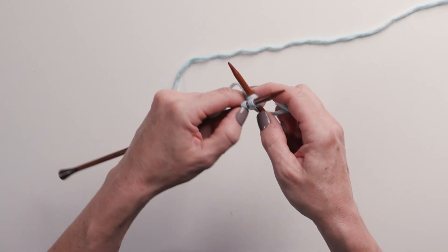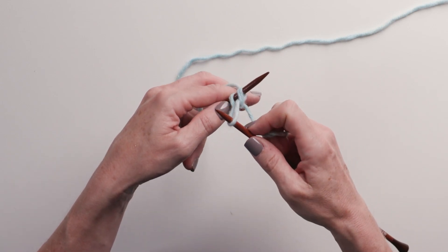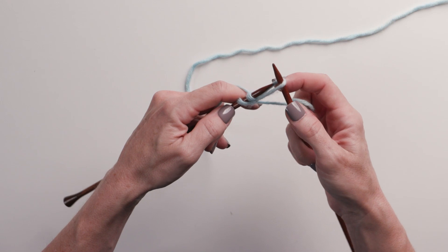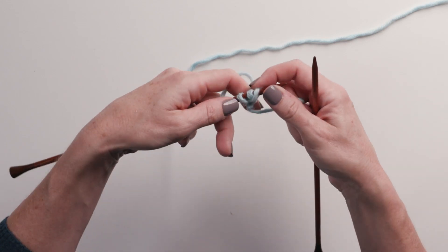Then you're going to wrap your yarn, pull that loop through, and put that stitch on your needle. So now you have three.